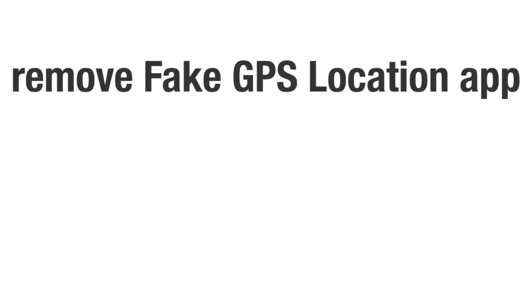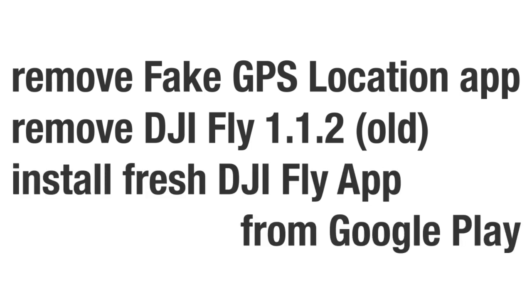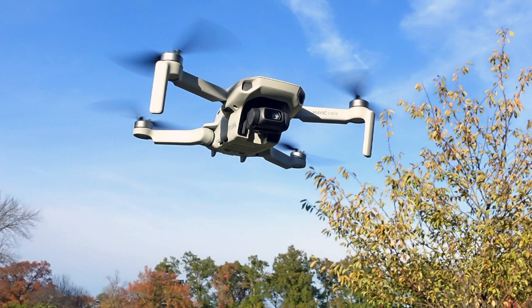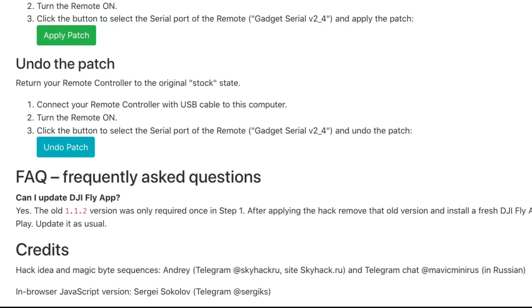Cleanup: on your phone, disable the fake GPS location — you can also uninstall the application, it won't be required. Uninstall the old version of DJI Fly and install a fresh one from Google Play. Now you can use your drone as usual. It might display a message about resetting wireless settings, but that is okay — you will have both radio ranges unlocked and max power enabled. You can leave channel selection in auto mode or select a channel manually. You can also undo the applied patch if you want.